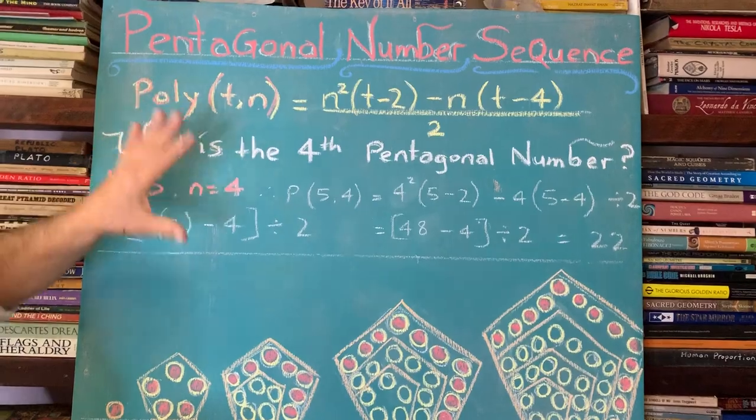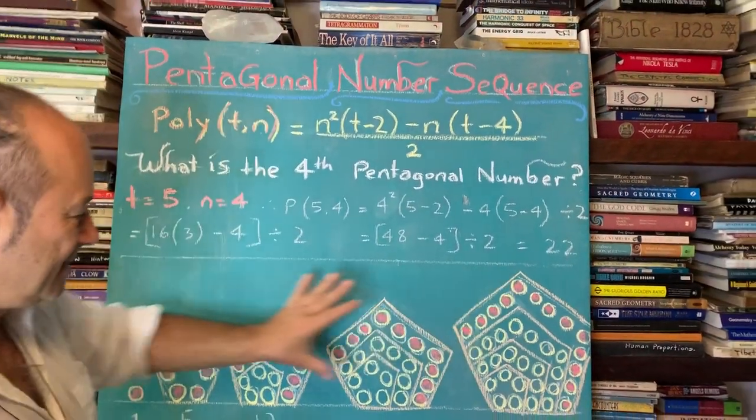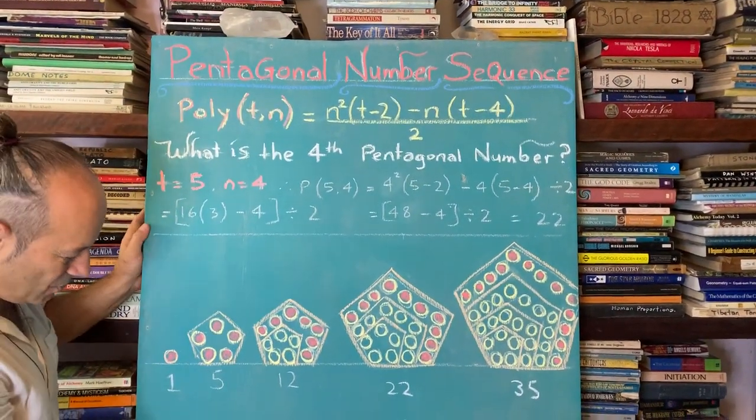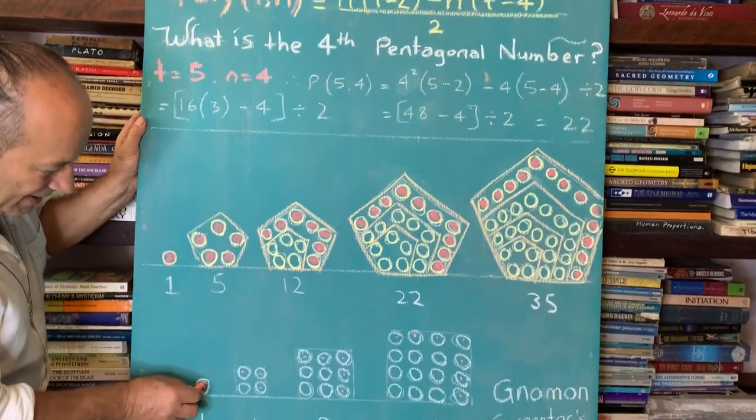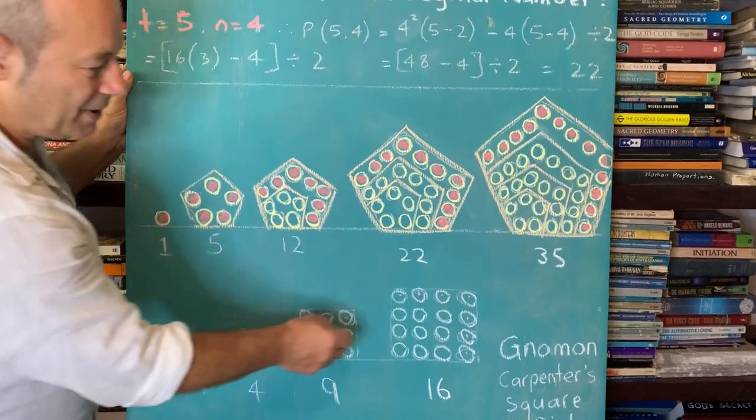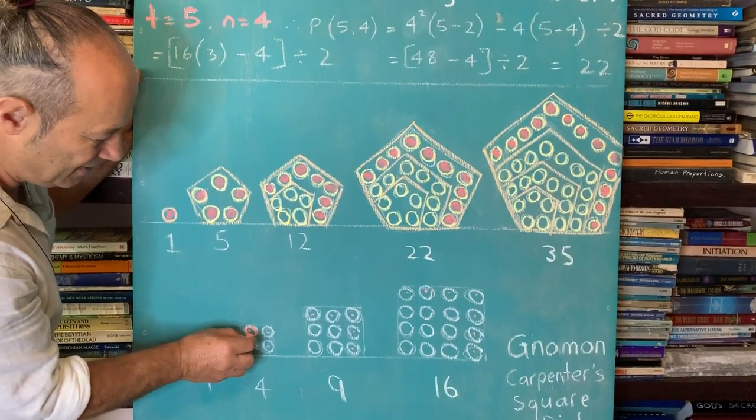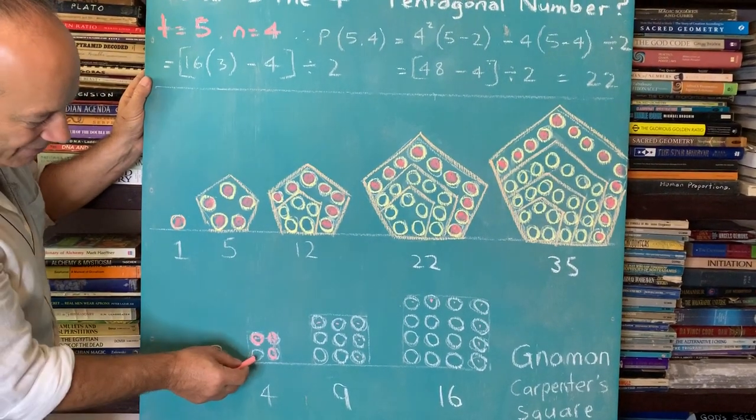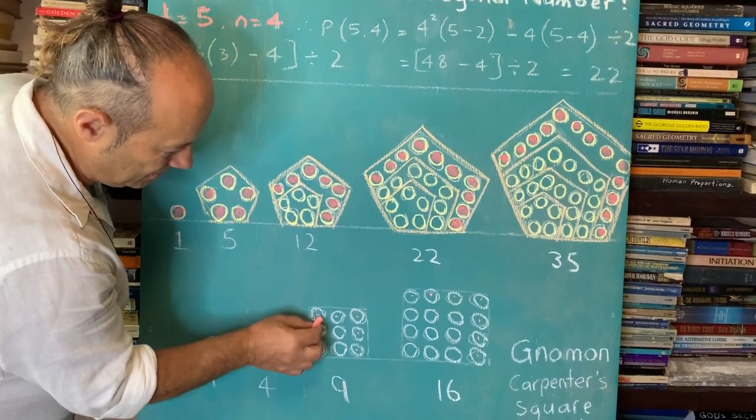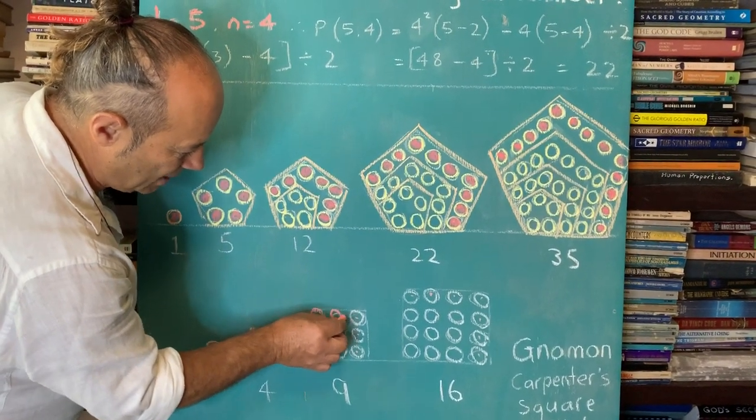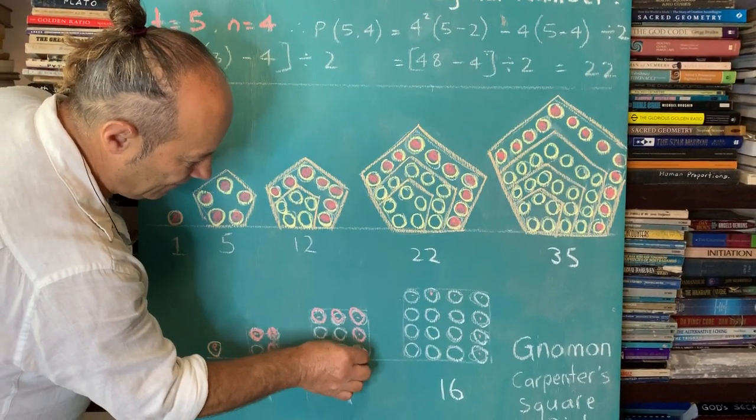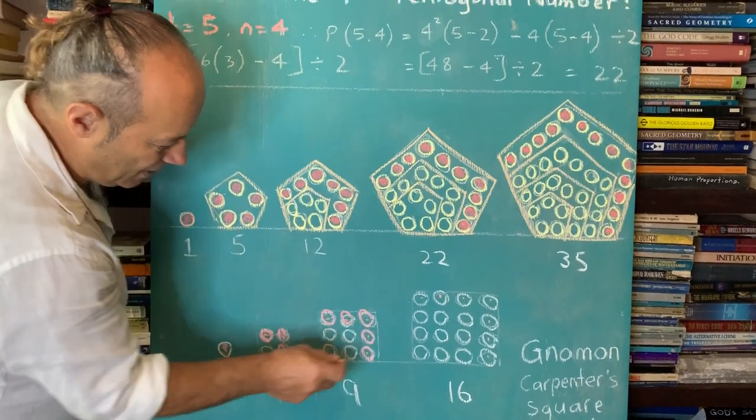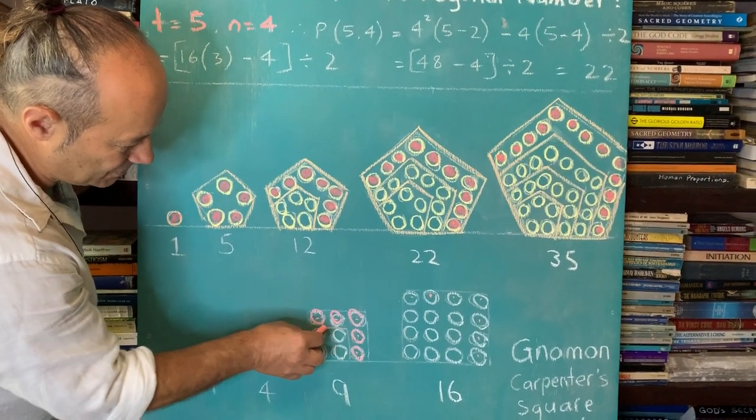First of all, to appreciate the pentagon series, we know squared numbers here. We all know one, four, nine, 16. But just observe that when we do two squared, we add these three around the first one. And then to do nine, we add this L shape of five around the original square there.